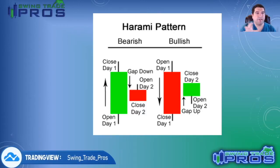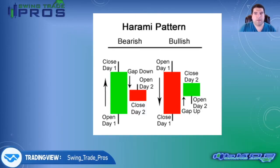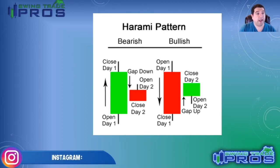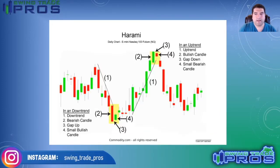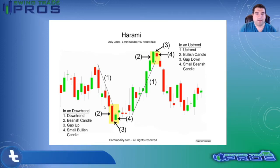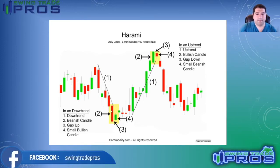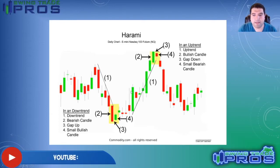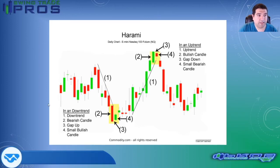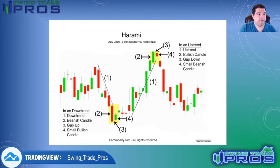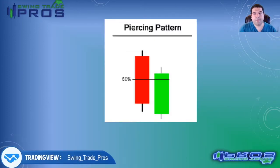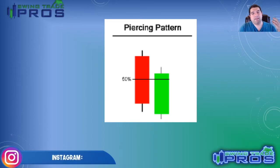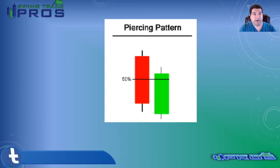This next pattern is called a harami pattern. We see these almost daily, so these are pretty standard candles. You can identify them as bearish harami or bullish harami. Sometimes you get a reversal of these to the upside or downside, so that's definitely something to pay attention to.